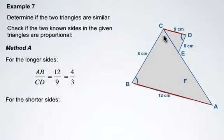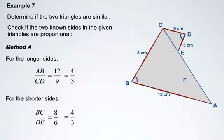Now if we take a look at the shorter sides that are indicated in the illustration, we have side length BC and we're going to compare that to side length DE. So we have an 8 over 6 ratio which again can be reduced to 4 over 3.